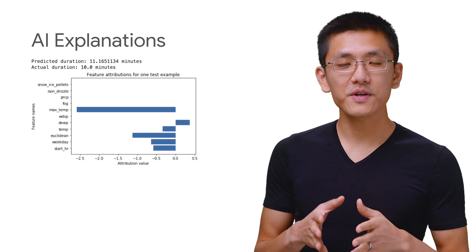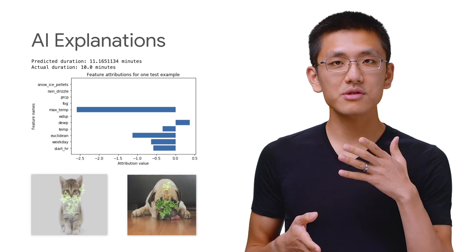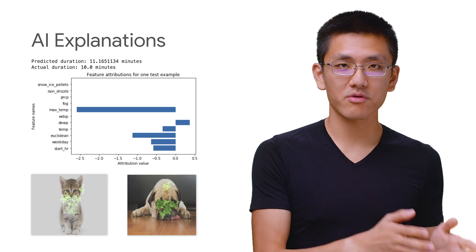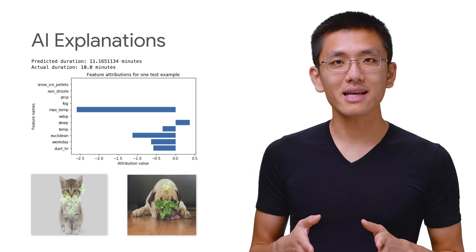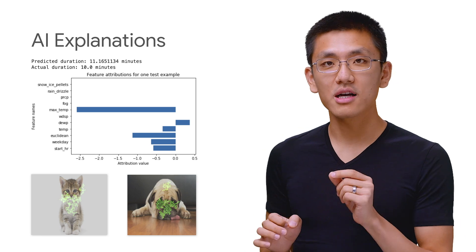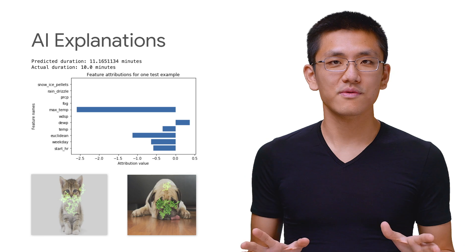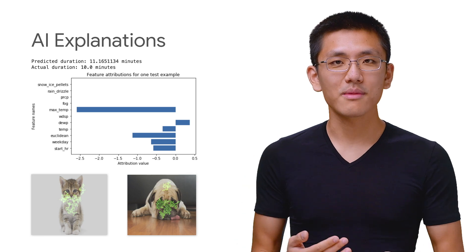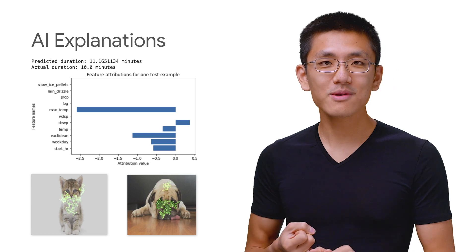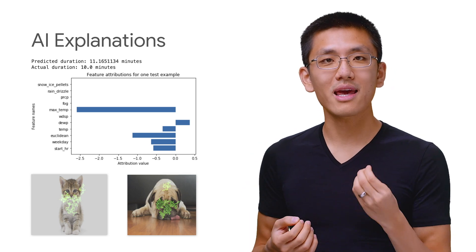AI Explanations integrates feature attributions into AI Platform prediction, and it helps you understand your model's outputs for classification and regression tasks. This means AI Explanations can tell you how much each feature in the data contributed to the predicted result. This is super useful because you can then verify the model is behaving as you would expect, recognize bias as it's happening, and get ideas for how you can improve your training data and model.